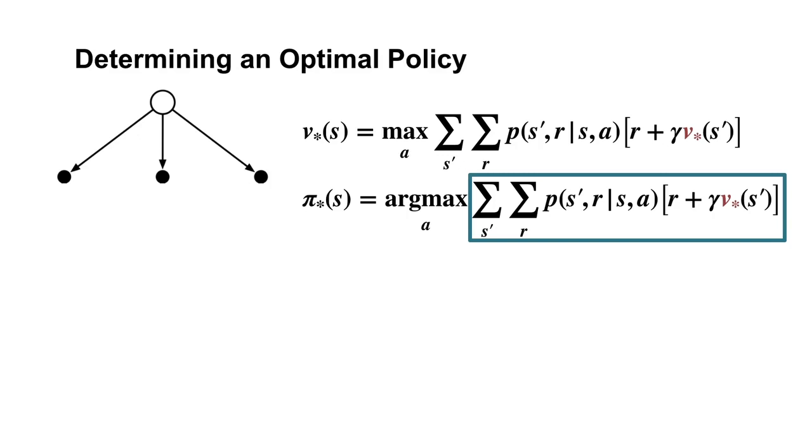To evaluate the boxed term for a given action, we need only perform a one-step look ahead at the possible next states and rewards that follow. First, imagine doing so for a particular action labeled A1. We look at each state and reward which might follow from state S after taking action A1.